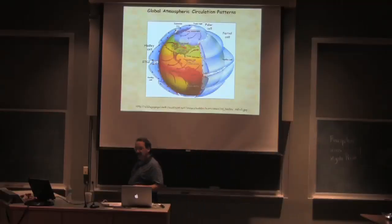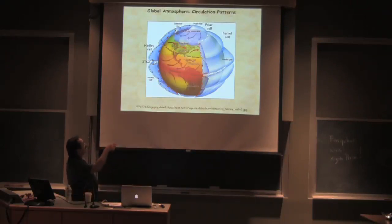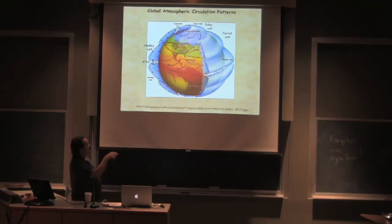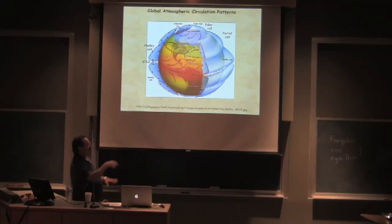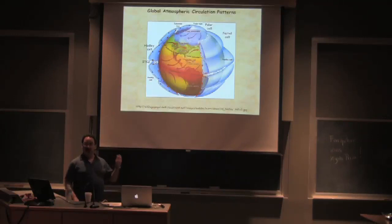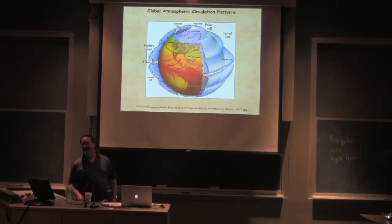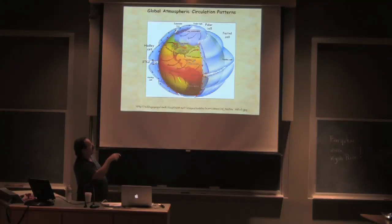Because of Coriolis, winds are deflected to the right in the northern hemisphere and to the left in the southern hemisphere. Winds flowing northward are deflected to the right, giving you westerlies. In the southern hemisphere, winds flowing southward are deflected to the left — also westerlies. In the Hadley cell southern hemisphere, winds flowing toward the equator are deflected to the left, giving you the southeast trade winds; in the north, they're deflected to the right, giving you the northeast trades.